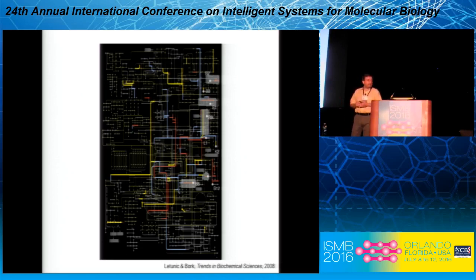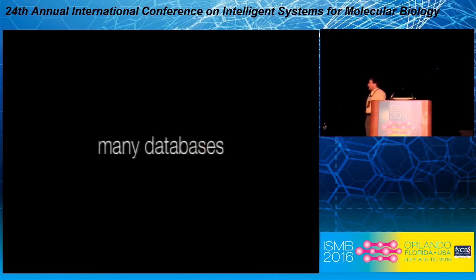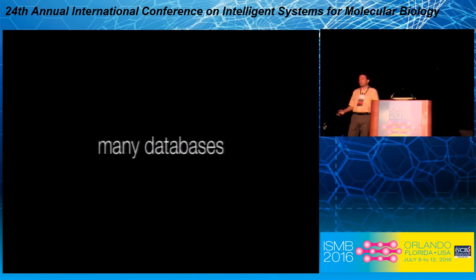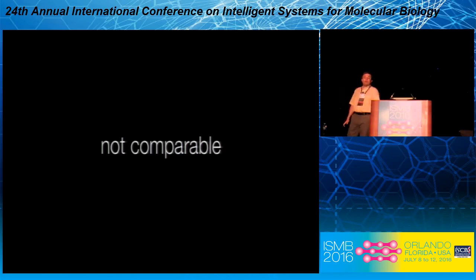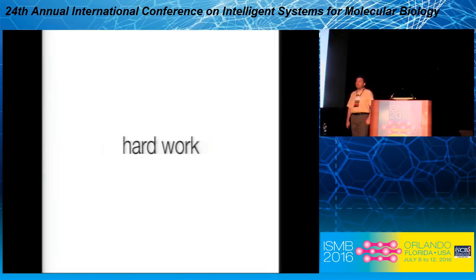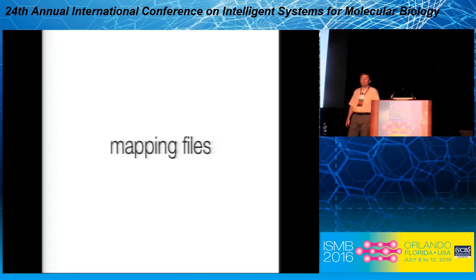When I describe it like this, it may sound like building the STRING database isn't that hard. Well, there are many databases. We can't even get the 2,000 genomes from one place — we have to go to several different sources. We have to go to many different interaction databases, many different pathway databases, et cetera. These tend to use different file formats, call the same genes different things, and different datasets even in the same database may be of completely different quality. Things are fundamentally not comparable — how do you compare gene fusion to co-expression to a yeast-two-hybrid screen to a pathway database? Some of it is just hard work: a lot of databases to download, different formats requiring parsers, different identifiers requiring mapping files. You need people doing it, and then it works.